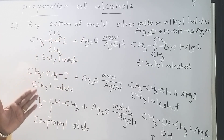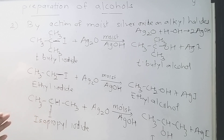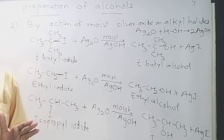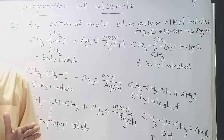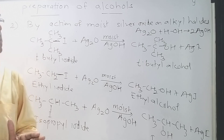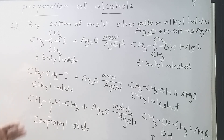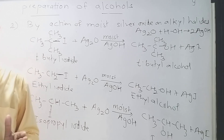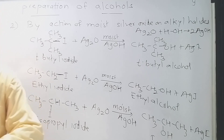So the first method for the preparation of alcohols is by alkaline hydrolysis of alkyl halides, and also by the action of moist silver oxide on alkyl halides. Thank you very much.